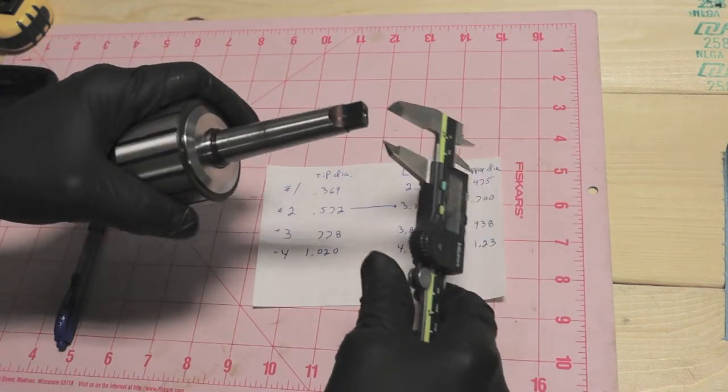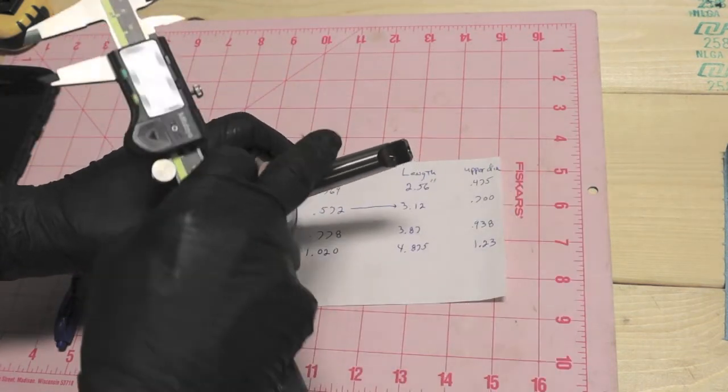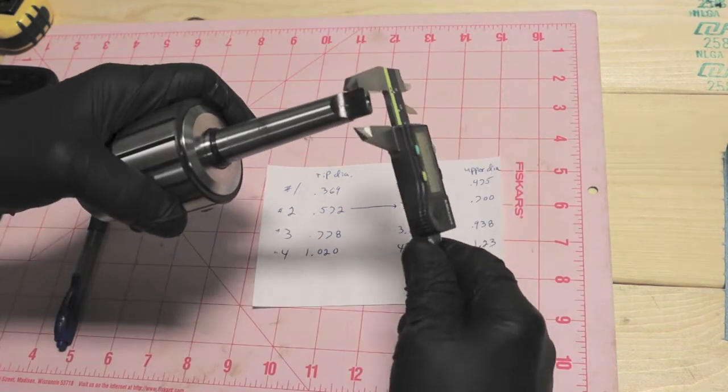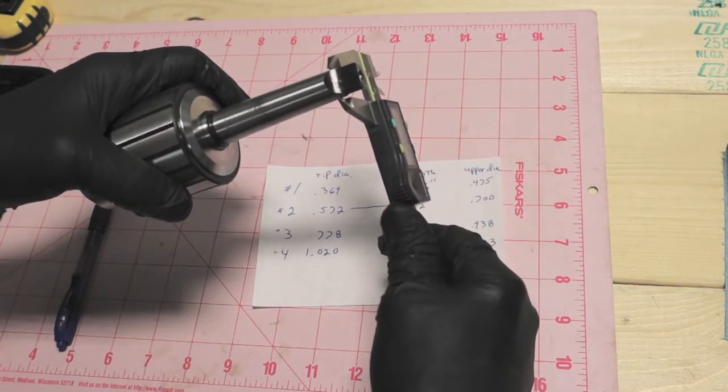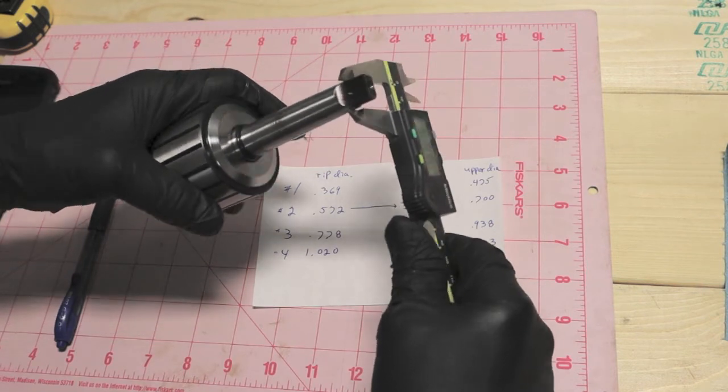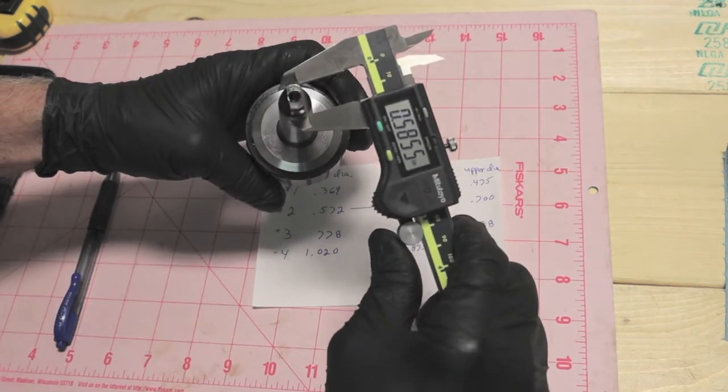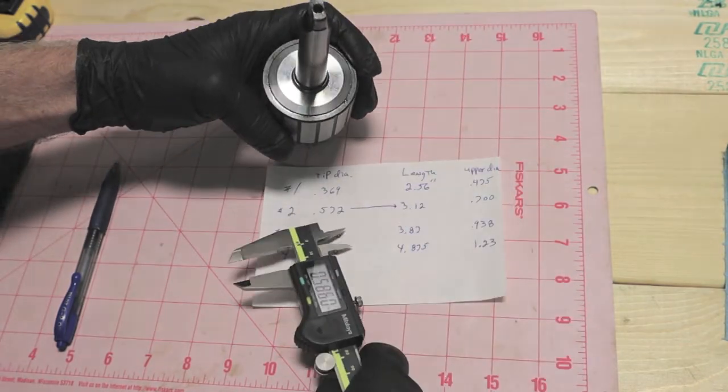Now the tip diameter, we'll measure from here to here across. Not here but down here where the taper is still coming into play on it. And we're at a 585. We should have been a 572.